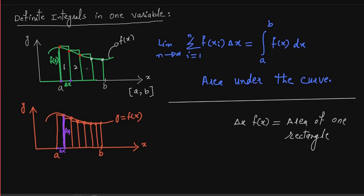If we add all the rectangles, we can approximate the area under the curve. You will see that there is some extra area we can account for. As we increase the number of rectangles, this approximation improves.